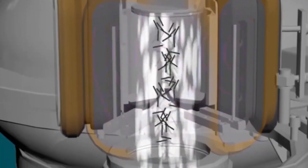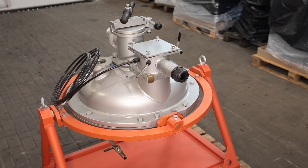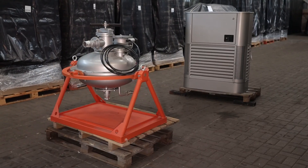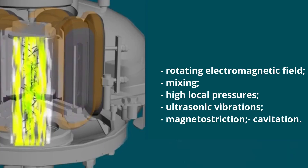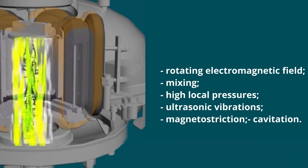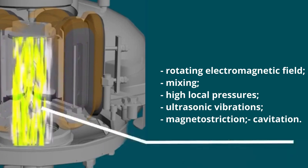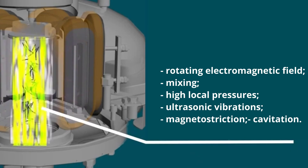Various processes occur in the working chamber which have a beneficial effect on the extraction of biologically active substances from medicinal plants. Among these processes are: rotating electromagnetic field, magnetostriction, acoustic vibrations, direct influence of ferromagnetic particles on plant material, cavitation, electrolysis, and others.